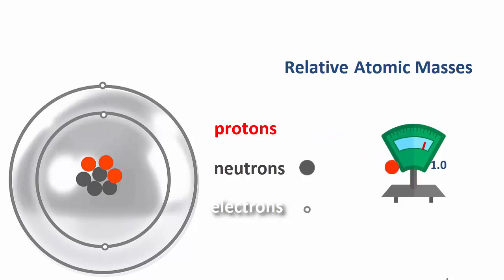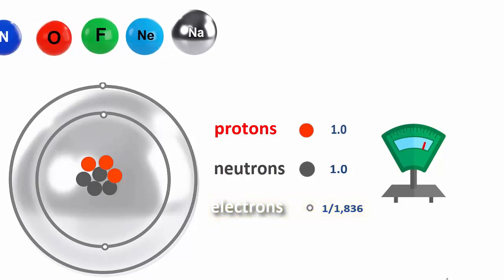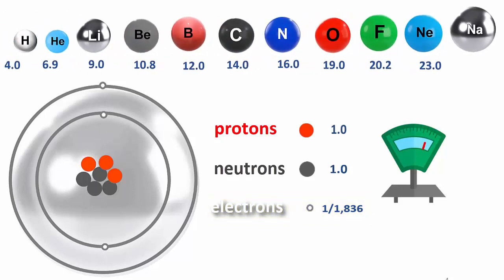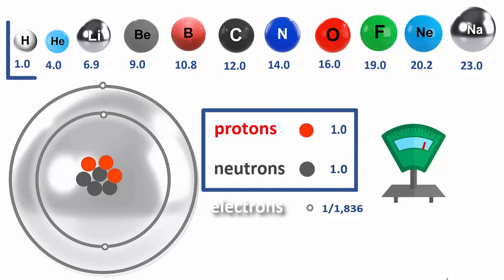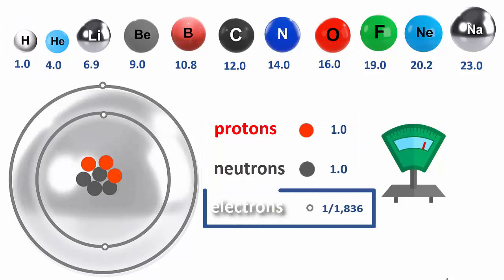Let's weigh them. Protons and neutrons each have a relative atomic mass of 1. But an electron is only 1/1836 in comparison. Protons and neutrons are the same mass as a hydrogen atom, but electrons weigh almost nothing in comparison, so we can ignore them.